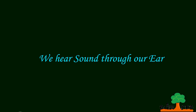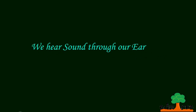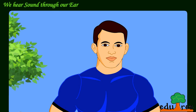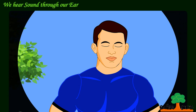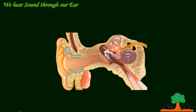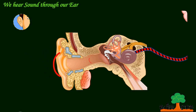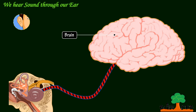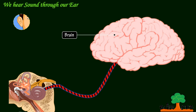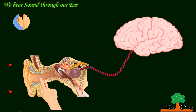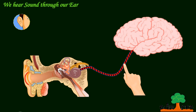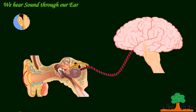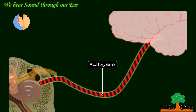We hear a sound through our ear. Let's understand the working of the human ear. The ear allows us to convert audible frequencies into electrical signals that travel to the brain. These signals travel to our brain through a nerve which is called the auditory nerve, as shown here.